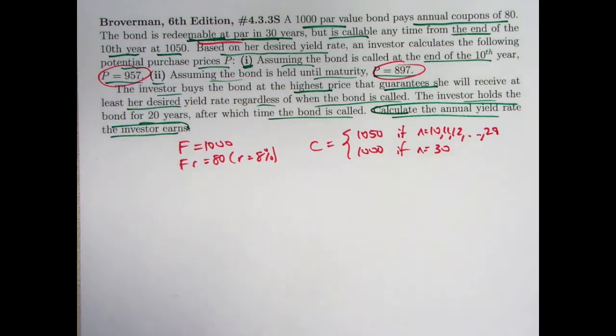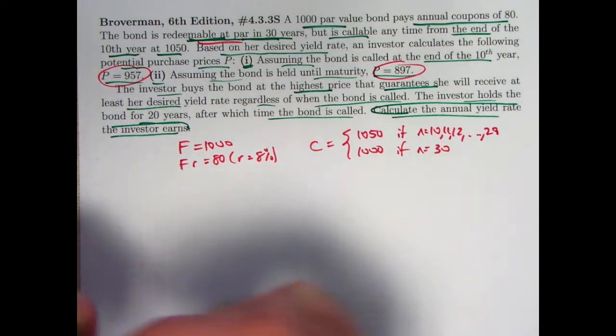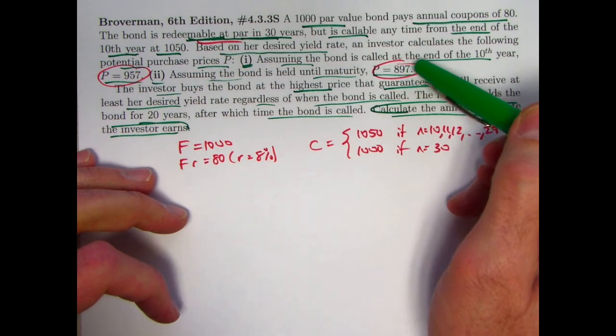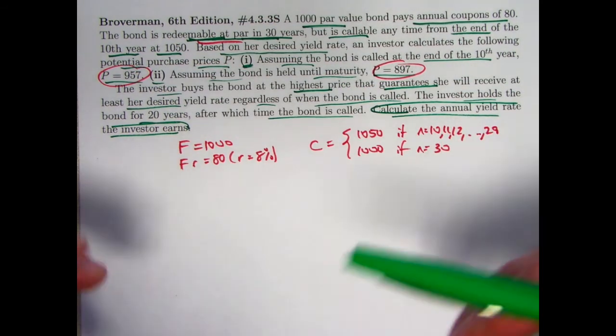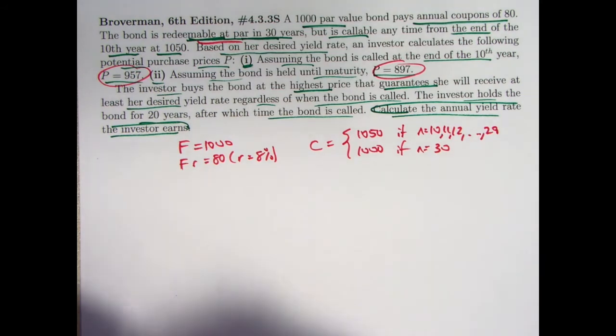Now, before we go ahead and answer the question, again, I'm assuming that the yield rates for these two choices, the potential purchase prices for which she calculates the minimal yield for, must be approximately the same. Let's double check that that really is true.